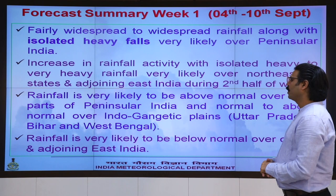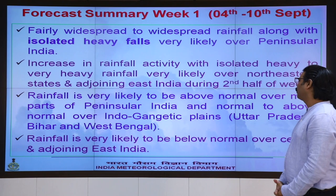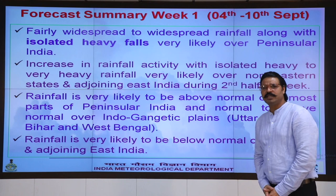Rainfall is very likely to be above normal over most parts of peninsular India and the Indo-Gangetic plains, while rainfall is very likely to be below normal over central and adjoining east India, as also shown in the previous figure.